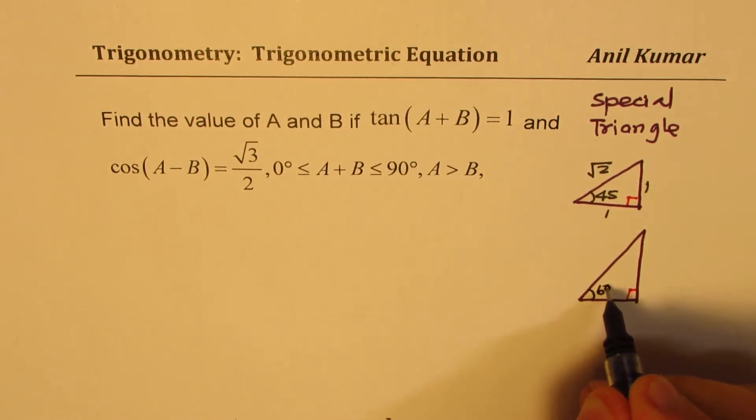So this angle is 60 degrees, that is 30 degrees. The sides are 1, 2, and √3.